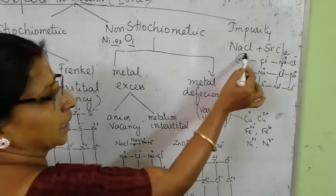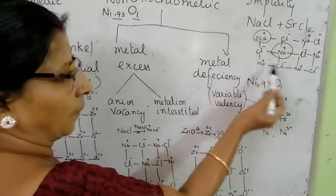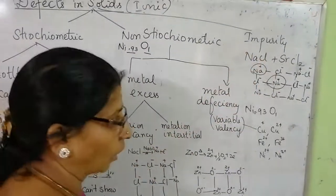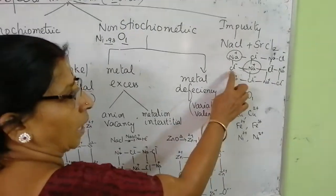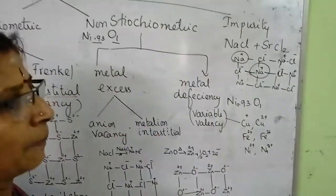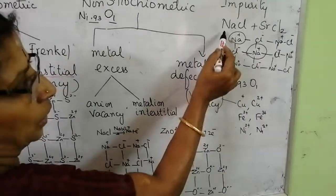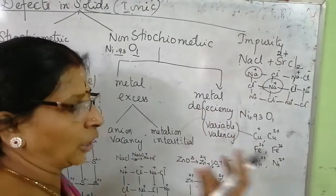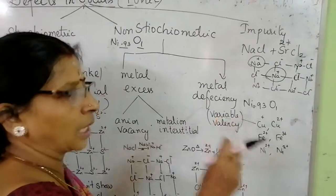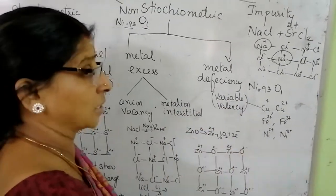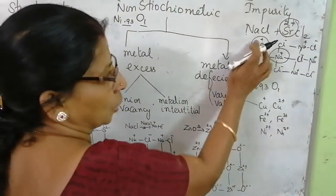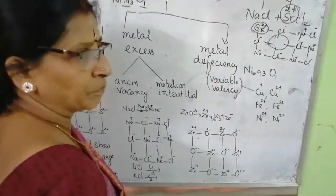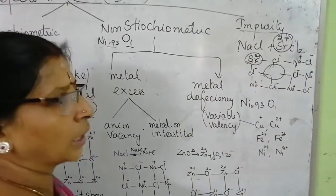In NaCl crystal, each Na⁺ will be surrounded by 6 Cl⁻. When strontium comes inside this NaCl, strontium has 2+ charge. So, in order to maintain electrical neutrality — meaning the total positive charge in the crystal has to be equal to the total negative charge — strontium 2+ coming means 2 Na⁺ have to go out of their place. But strontium occupies only one place, so one place will remain vacant. This type of defect is called impurity defect.